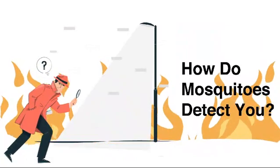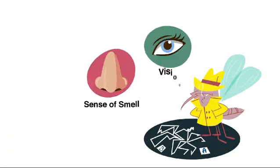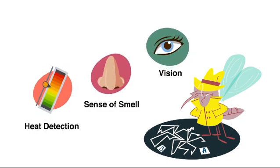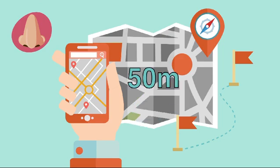How do mosquitoes detect you? Mosquitoes rely on multiple senses to identify their targets. Sense of smell. They can detect carbon dioxide from as far as 50 meters away.